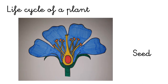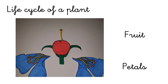Next, a seed develops inside the ovary. Then the ovary grows into a fruit and this fruit contains the seeds.